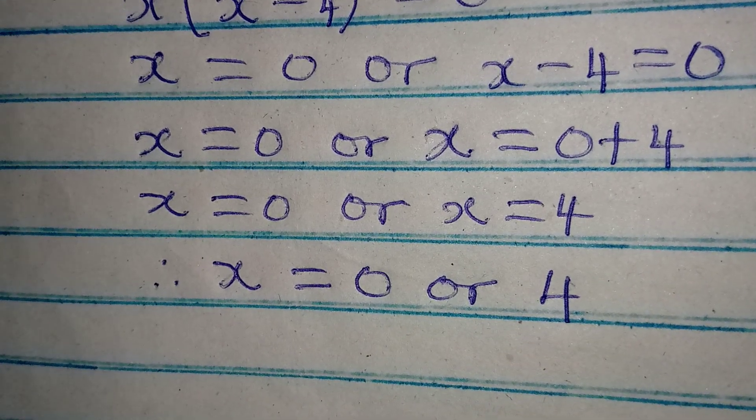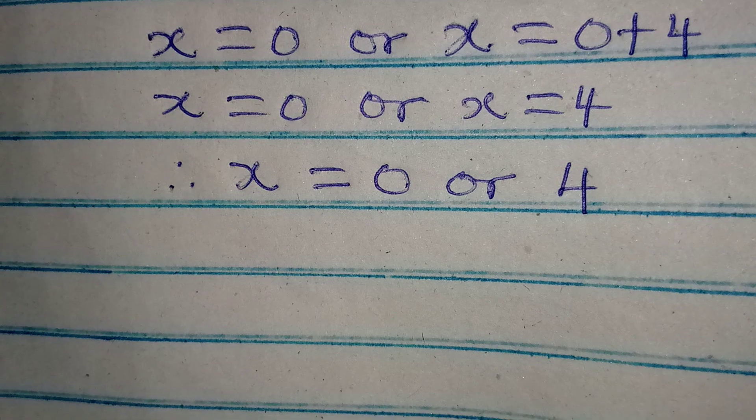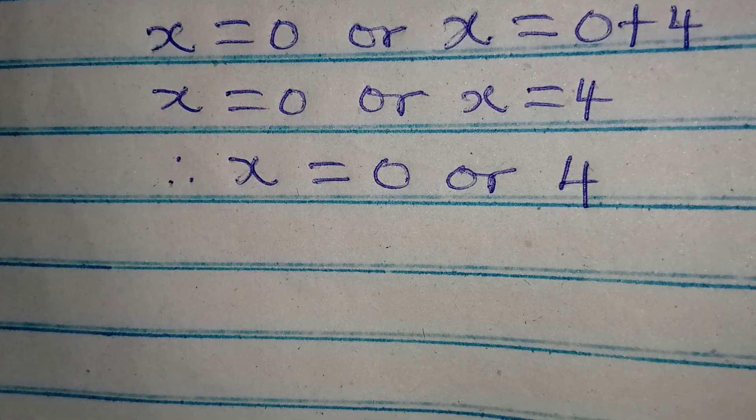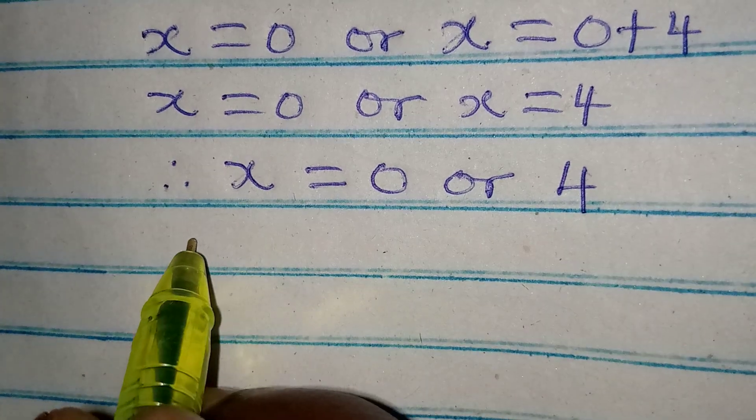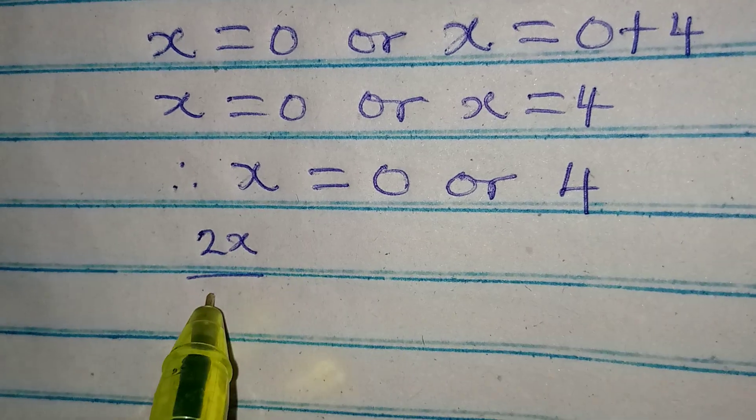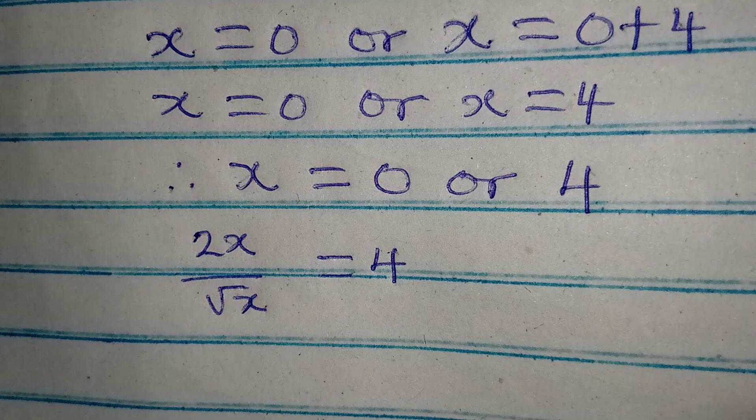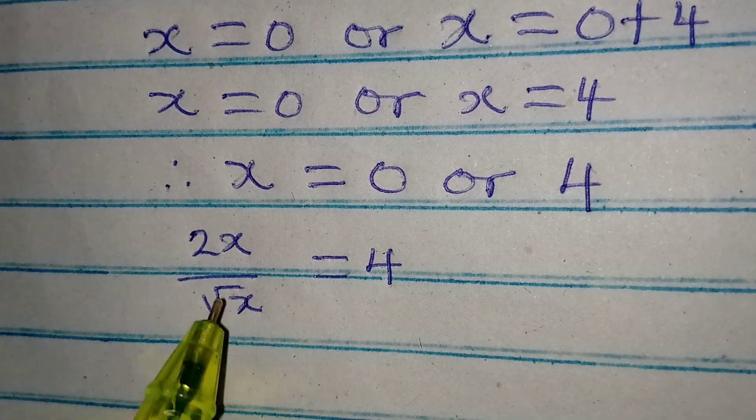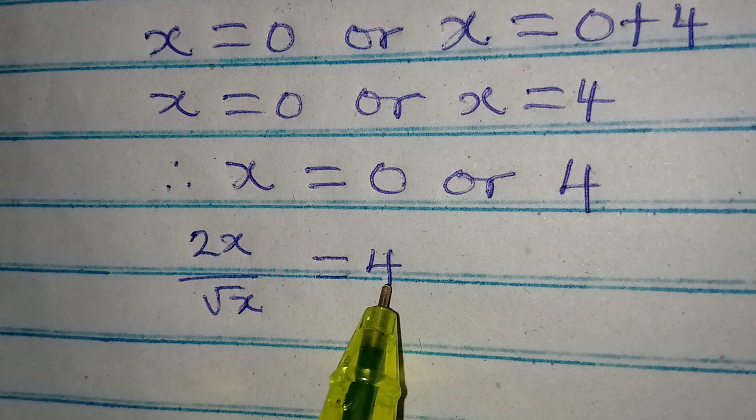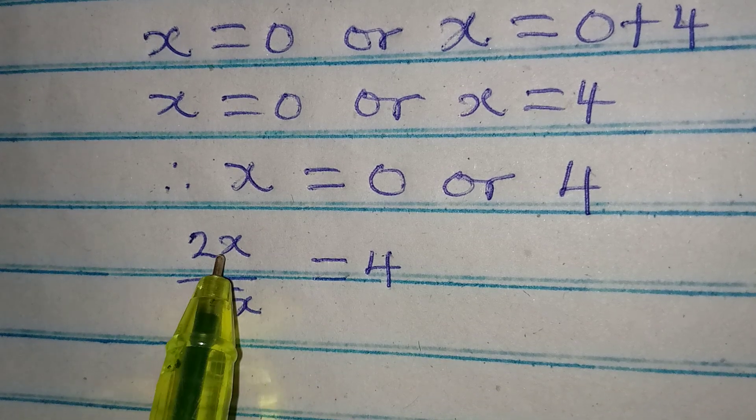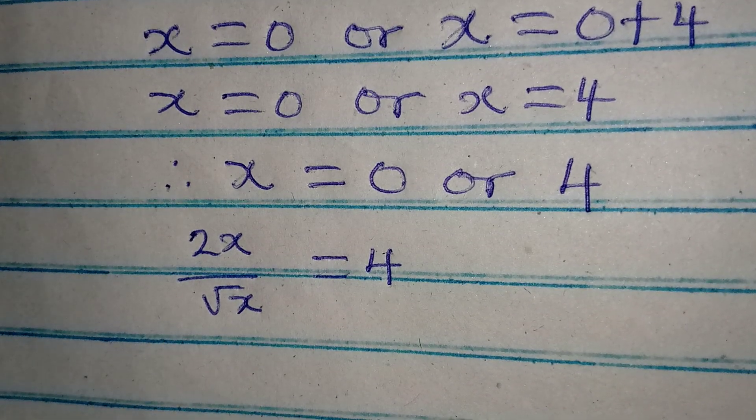Now if you put this into the equation, both of them will not be satisfying because the original equation is 2x over square root of x equals 4. And if I put x to be equal to 0, this will never give me 4 because you'll be having 0 over 0 at the end of the day.